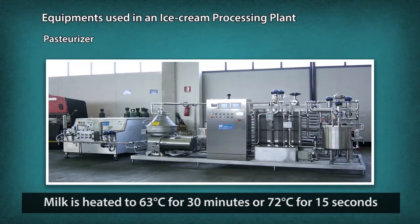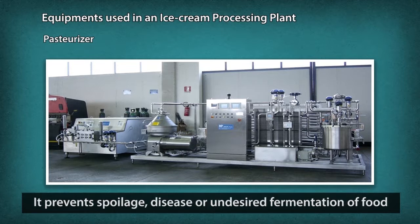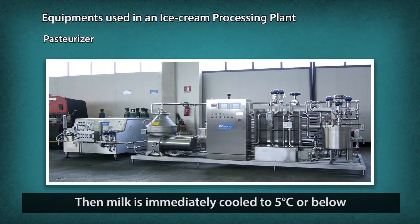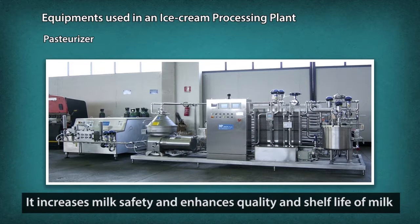Pasteurizer: Pasteurization of milk is the process of heating milk to 63 degrees centigrade for 30 minutes, or 72 degrees centigrade for 15 seconds, in order to kill microorganisms that could cause spoilage, disease or undesired fermentation of food. After pasteurization, the milk is immediately cooled to 5 degrees centigrade or below. The purpose of pasteurization is to increase milk safety for the consumers and to enhance the quality and shelf life of milk products.